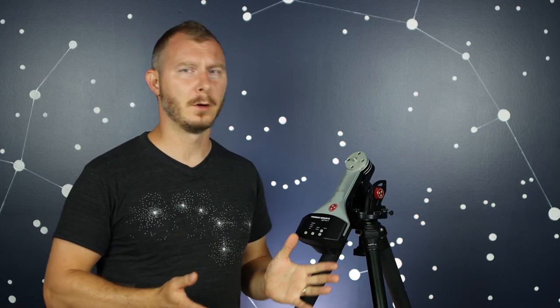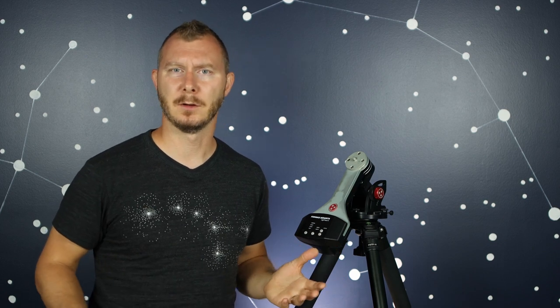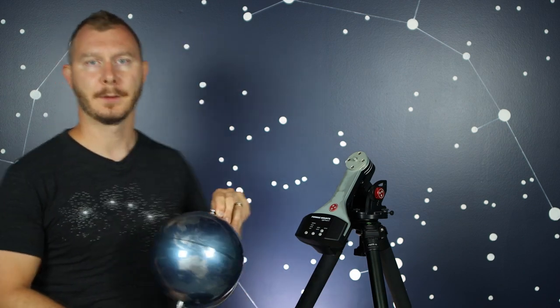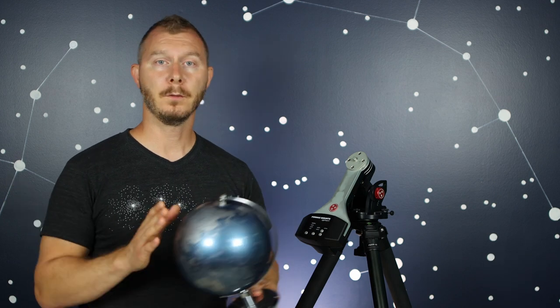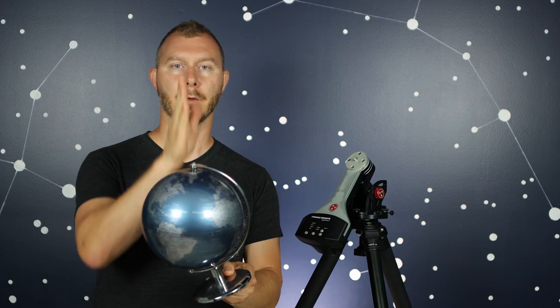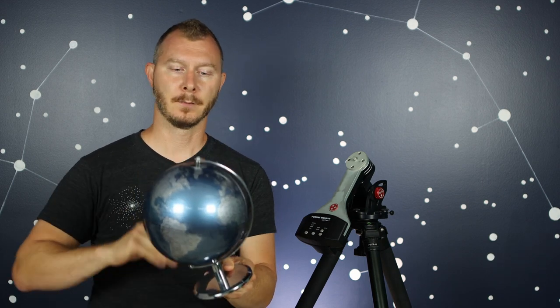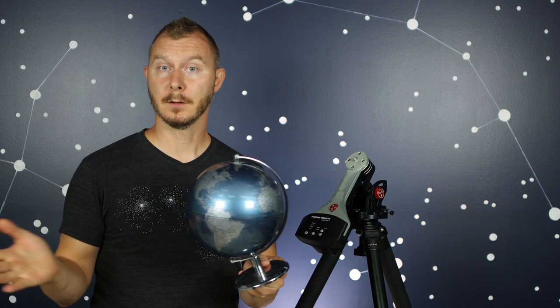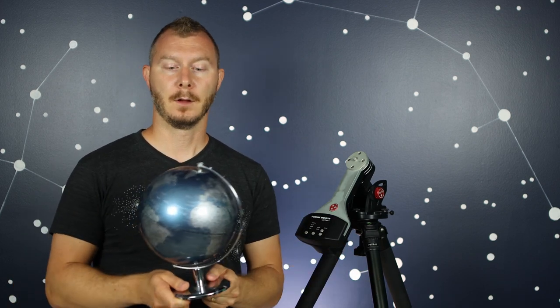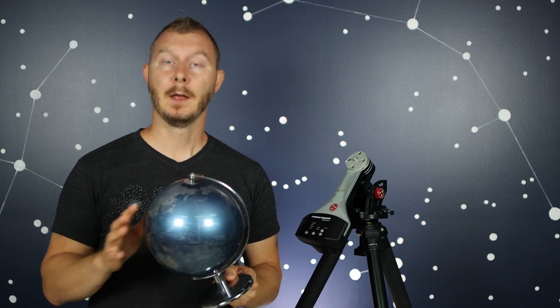Now maybe you're thinking to yourself, what is this polar alignment nonsense? I read about it on a forum, the people there made it seem scary and difficult. I just want to take pictures of space. Why do I have to mess around with this stuff? Well, we'll take this globe and we'll use it to illustrate. So the world of course is spinning and as it spins it does so around a north to south axis. This spinning is the reason that we use trackers or tracking mounts and that allows us to follow the sky.